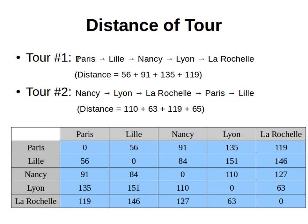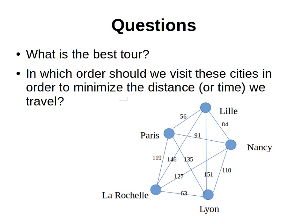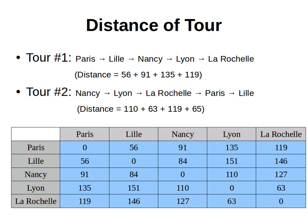One possible tour would be going from Paris to Lille, from Lille to Nancy, from Nancy to Lyon, and then from Lyon to La Rochelle. We can compute the distance by looking at this table or graph, and the total distance here is 56 plus 91 plus 135 plus 119. Another possible route would be Nancy to Lyon, Lyon to La Rochelle, La Rochelle to Paris, and Paris to Lille. We compute the distance of each tour and choose the one that gives us the smallest total distance.